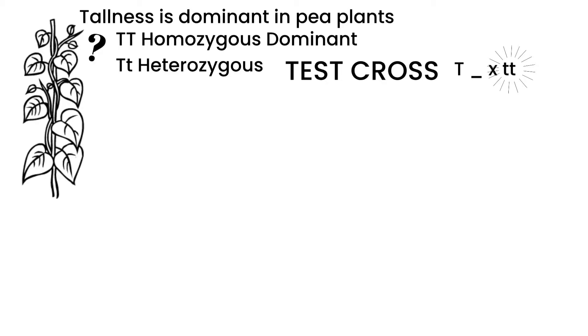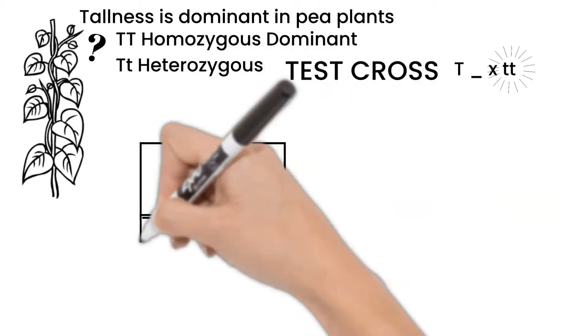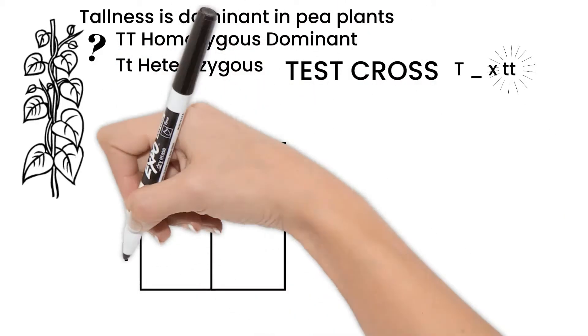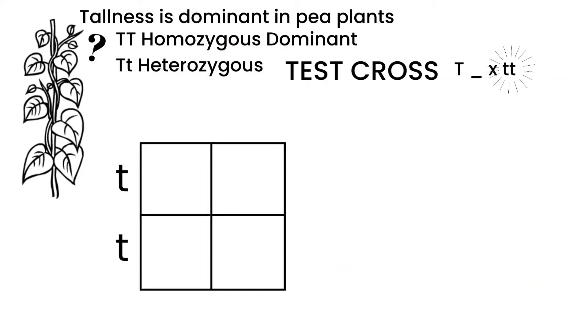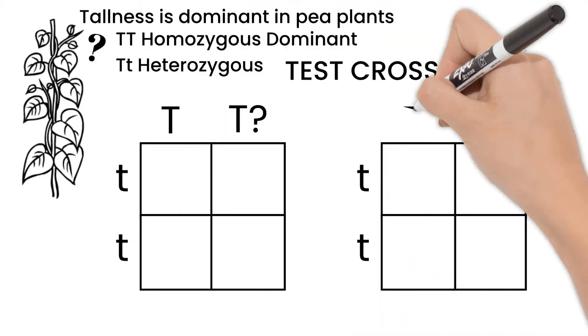With our pea plant, we would cross our tall one with a short pea plant. As it is short, we know it's homozygous recessive. Let's make two Punnett squares just to see what would happen if our pea plant is homozygous dominant and another if it is heterozygous.